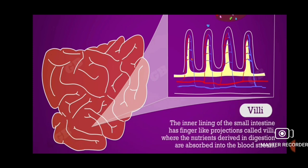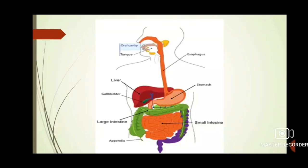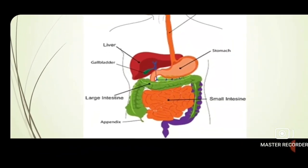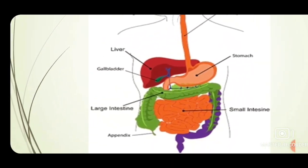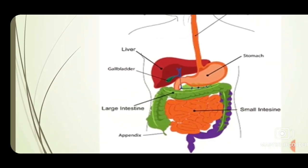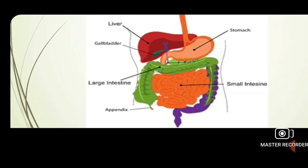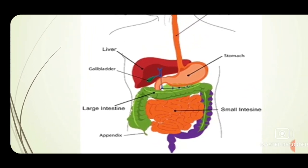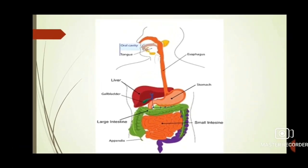After the small intestine, there is a large intestine. The villi absorb nutrients into the blood stream, and the waste material that is not digested enters the large intestine. From the large intestine, waste comes through the rectum. This is the overall process of nutrition in human beings.